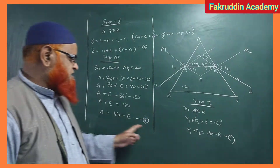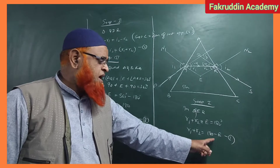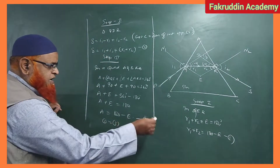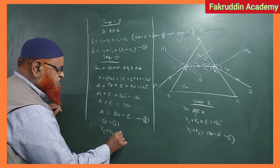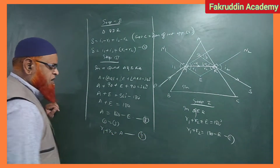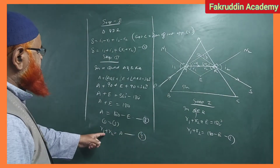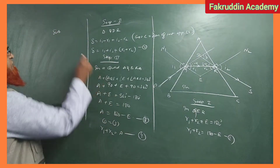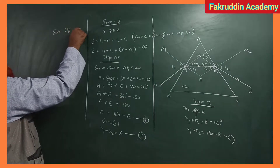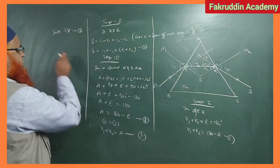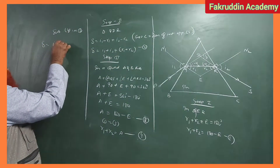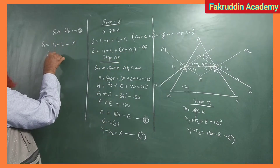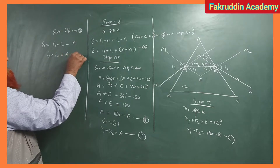If you compare equations 1 and 3, they have the same right-hand side. So from this you get R1 plus R2 is equal to A, taken as equation number 4. Substituting equation 4 into equation 2, you get delta equals I1 plus I2 minus A, so I1 plus I2 is equal to A plus delta. Let this be equation number 5.